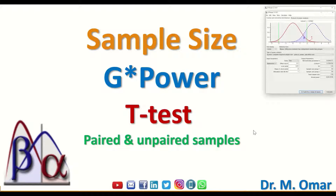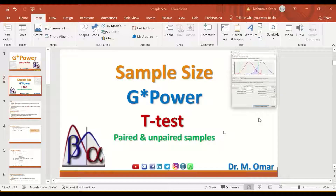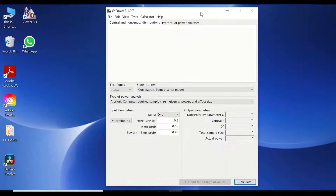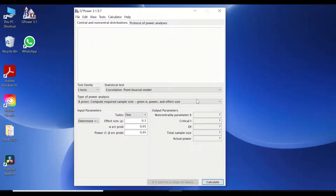Here we're going to show you how to use the software to calculate the sample size when you want to use a T-test, whether it is paired or unpaired. This test is a parametric test that can be used for finding differences between two groups when the data in those groups are normally distributed. I have downloaded and installed a copy of the software — G*Power 3.1.9.7.